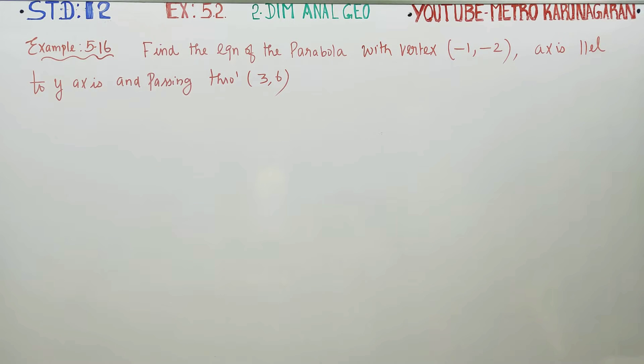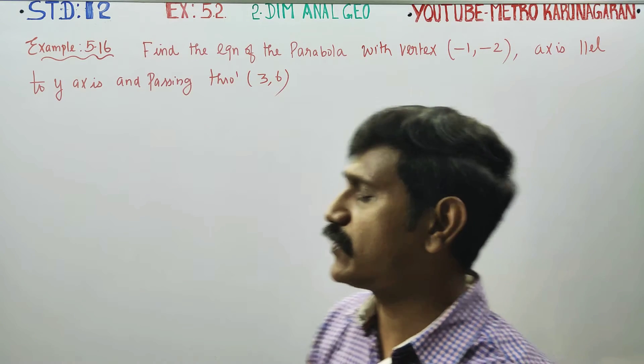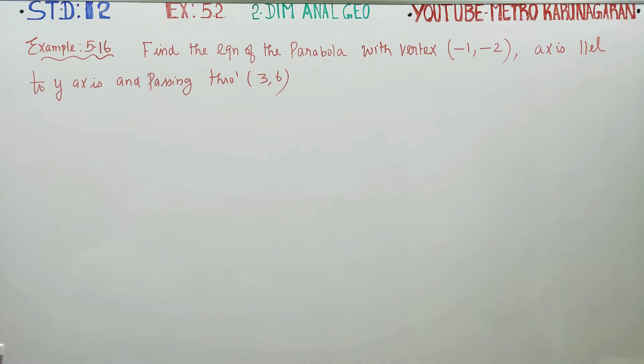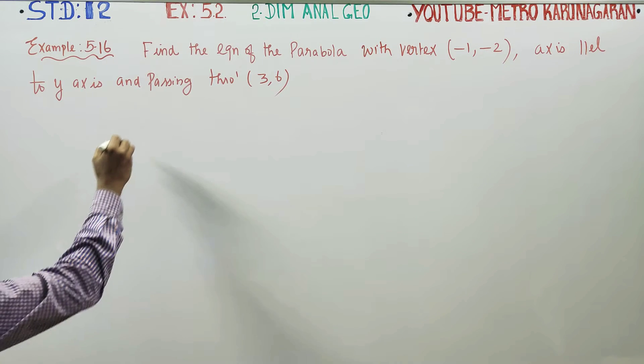Dear 12th standard students, in exercise number 5.2, related example 5.16: find the equation of the parabola with vertex minus 1 comma minus 2.